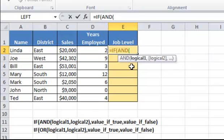Now the first logical test, we'll check whether cell D2, my years employed, is greater than five. I'll separate my logical tests with a comma, and my second logical test, we'll check whether cell C2, the sales for our first salesperson, is greater than $10,000.